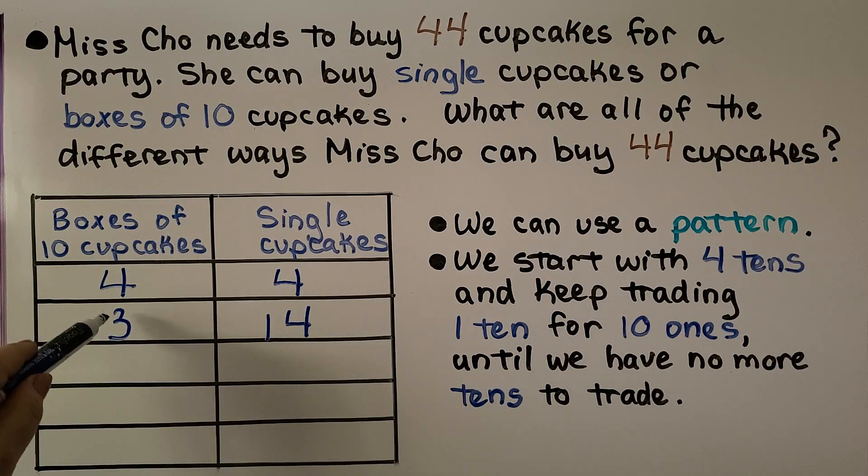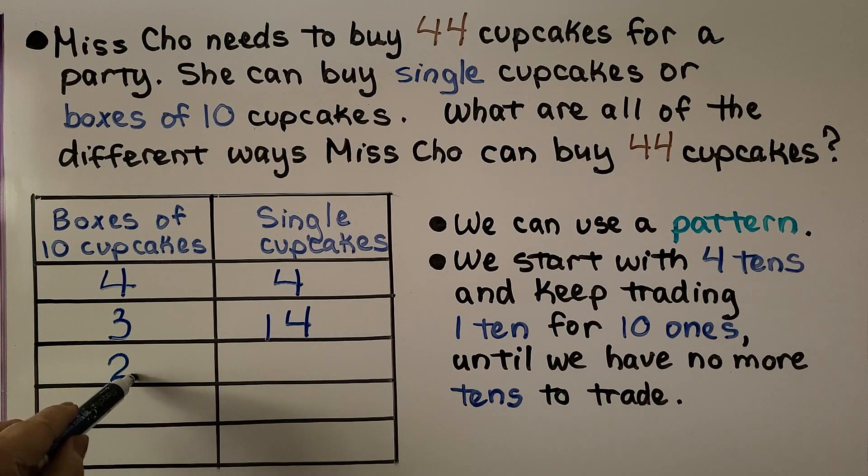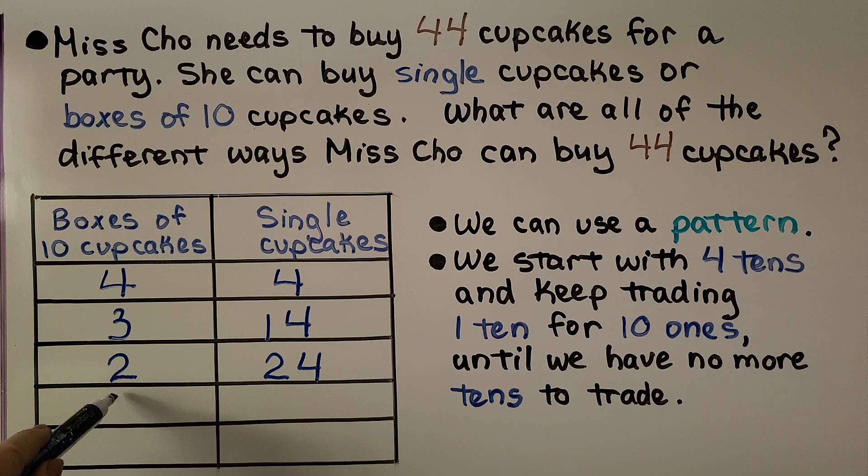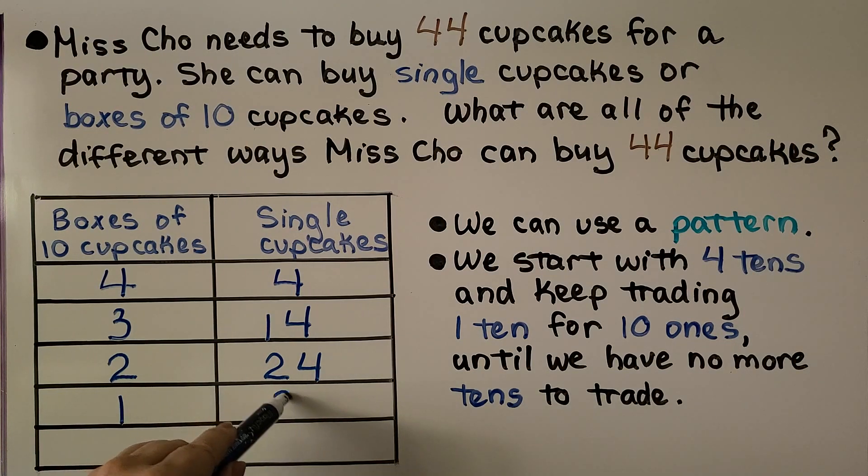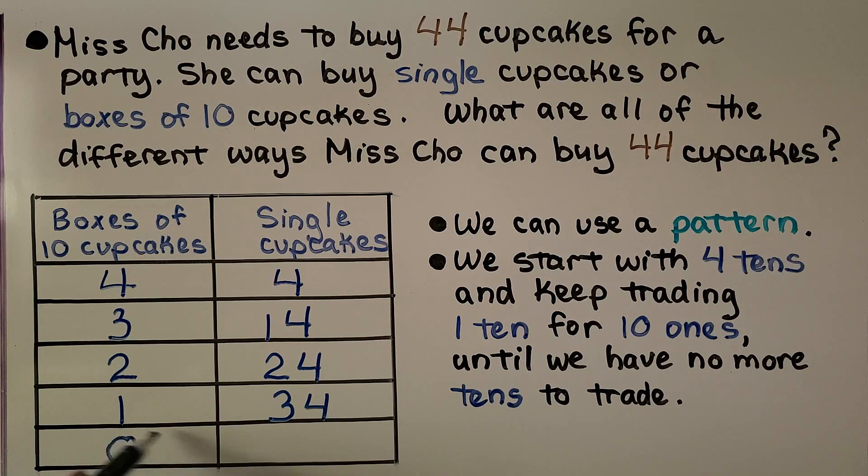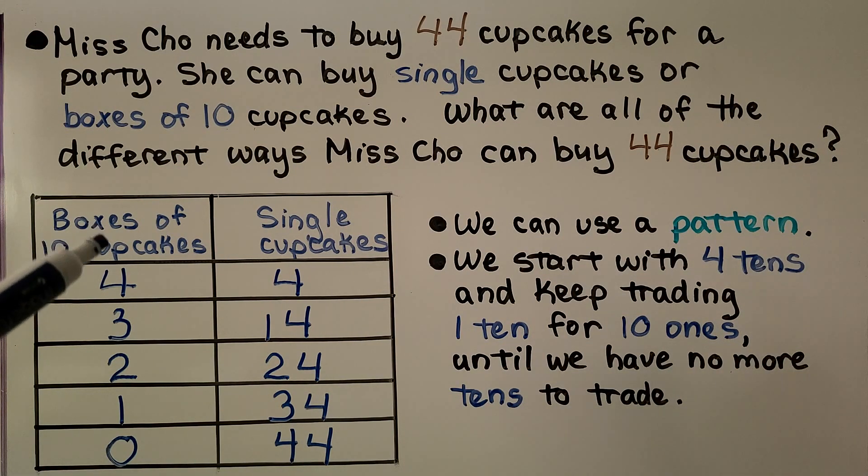We can trade again. This will go down to a 2. This will go up to a 24. This will go down to a 1. This will go to a 34. This will go down to 0 and this will go to 44. Do you see the pattern? We keep trading 1 ten for 10 ones until we have no more tens to trade. We went from 4 tens for 44 down to 0 tens.